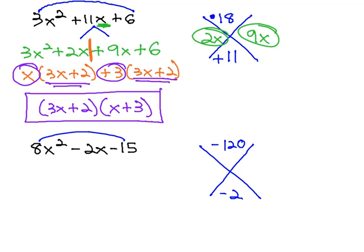We might try a few combinations as we try to multiply to negative 120. It ends in a 0, so we might notice that 10 times 12 is 120, and if the 12 is negative, they will add to negative 2. We now know we need to split the middle term up into 10x and negative 12x.